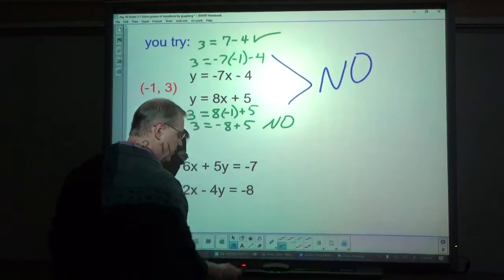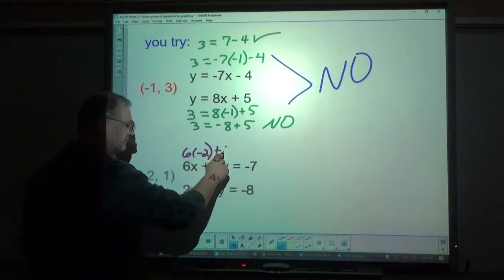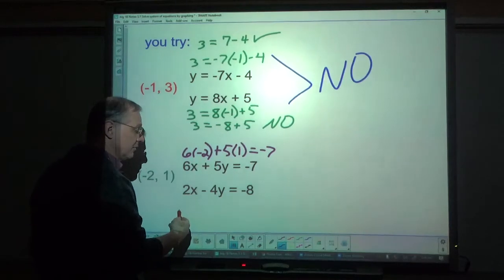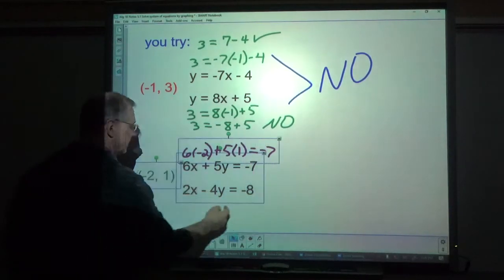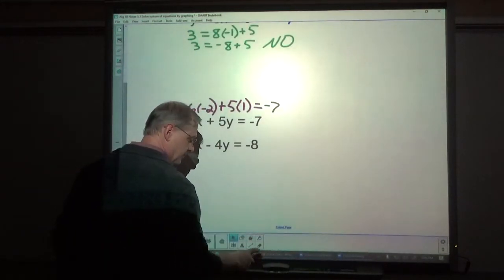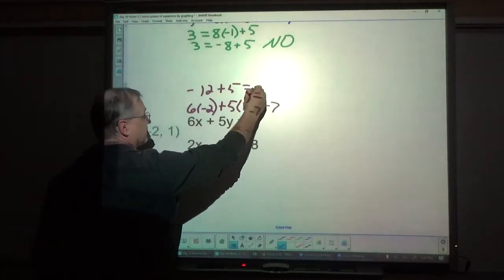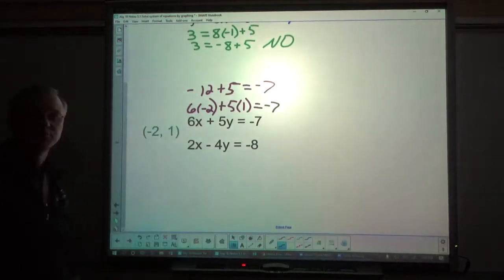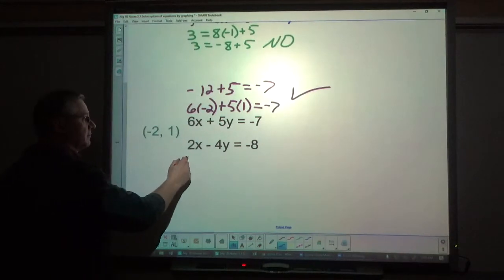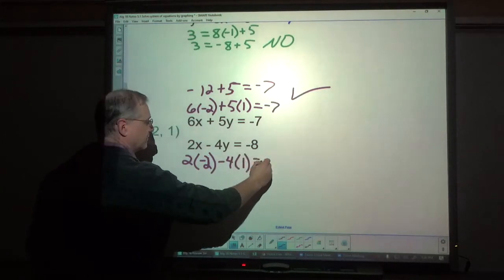Let's try down below here. Negative 2, 1. 6 times negative 2 plus 5 times 1 has to equal negative 7. Negative 12 plus 5 has to equal negative 7. Does negative 12 plus 5 equal negative 7? Yeah it does.